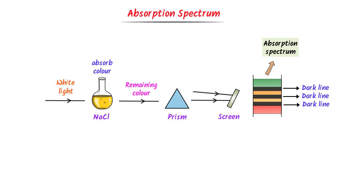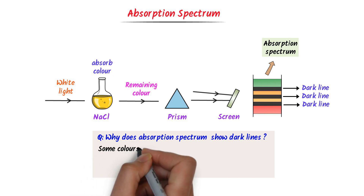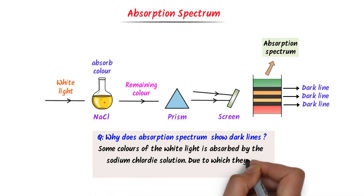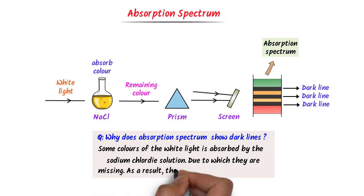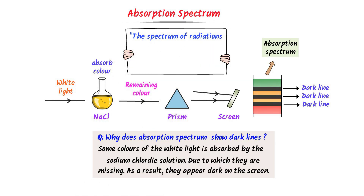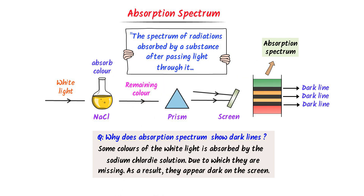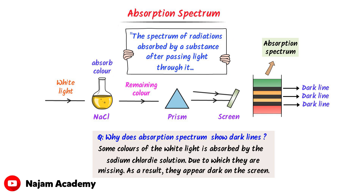Why does an absorption spectrum show dark lines? It is because some colors of the white light are absorbed by the sodium chloride solution, so they are missing. As a result, they appear as dark gaps on the screen. We define absorption spectrum as the spectrum of radiation absorbed by a substance after passing light through it. Absorption spectrum is formed when a substance absorbs some colors of white light.